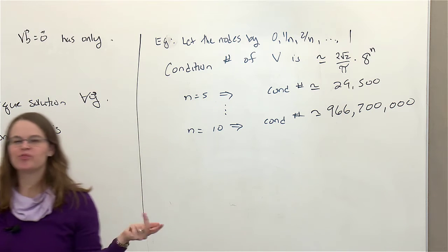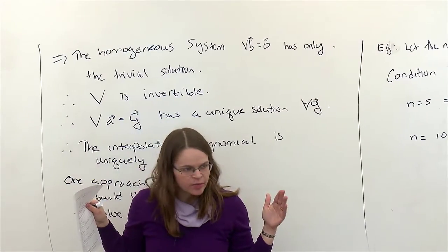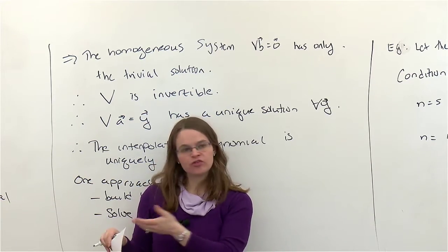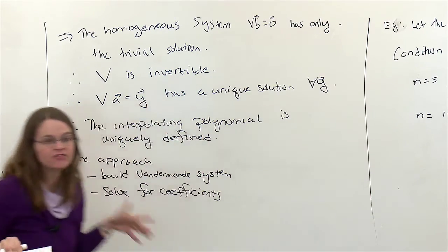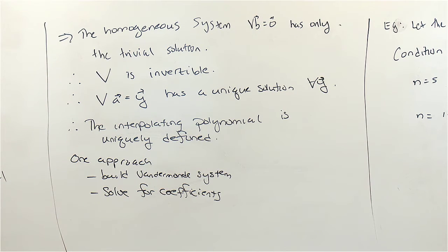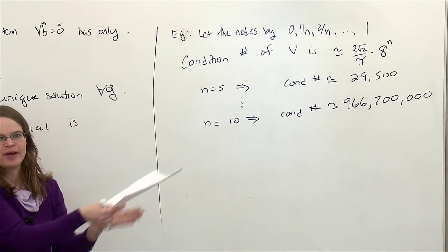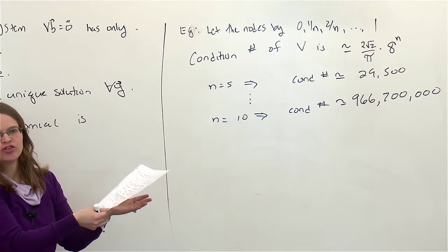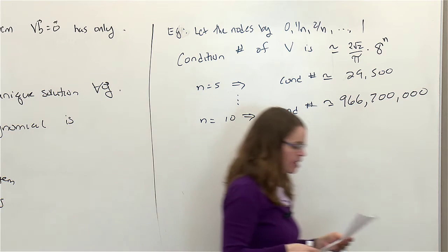You can think of it as these basis functions being almost parallel to each other — x squared, x cubed, x to the fourth start to look kind of similar to each other as n gets large. That's what's going wrong: we're using basis functions that are almost parallel in some sense. We've seen before that when rows are almost parallel, it's not so good. So let's try a different basis.